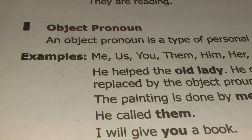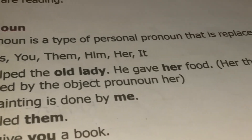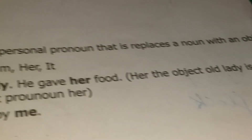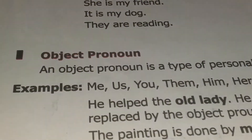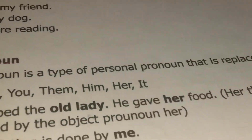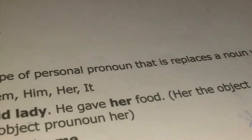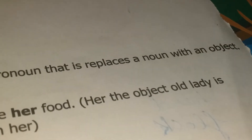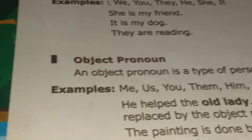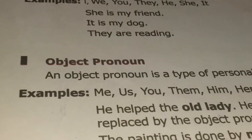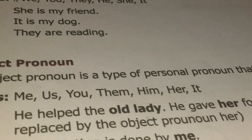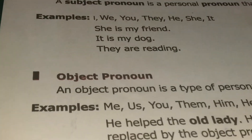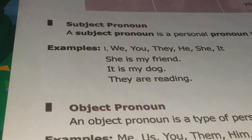Object pronoun: an object pronoun is a type of personal pronoun that replaces a noun functioning as an object. Examples are: me, us, you, them, him, her, it. These are personal pronouns and examples of object pronouns.